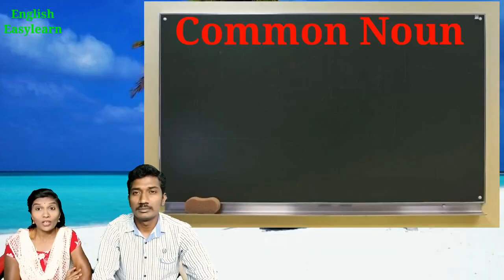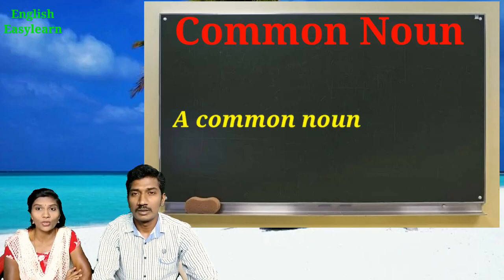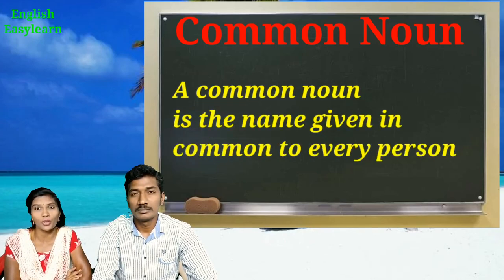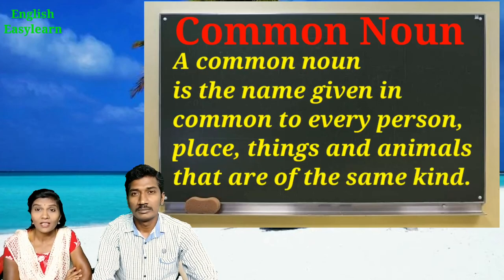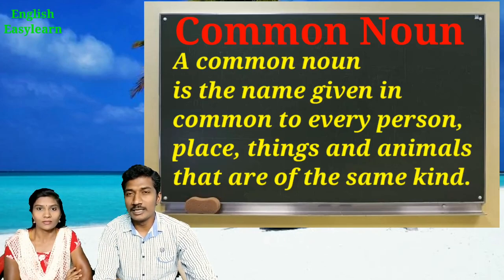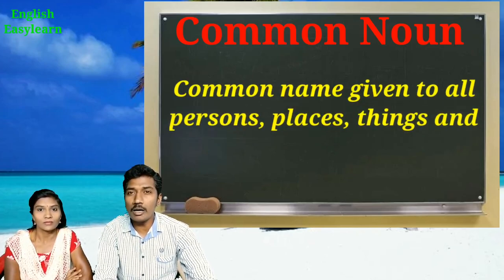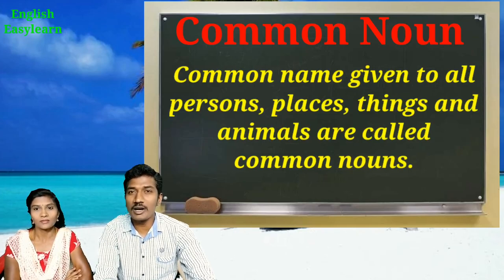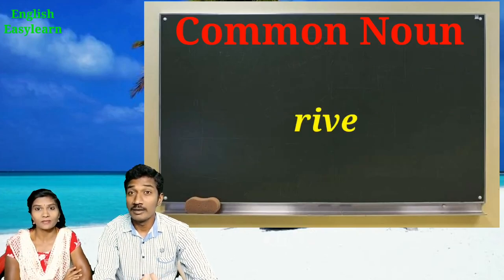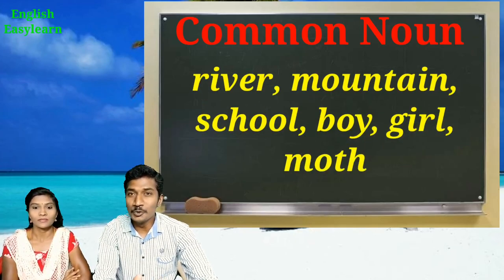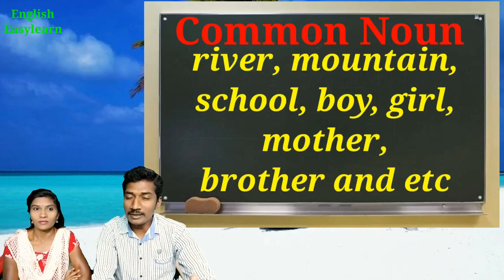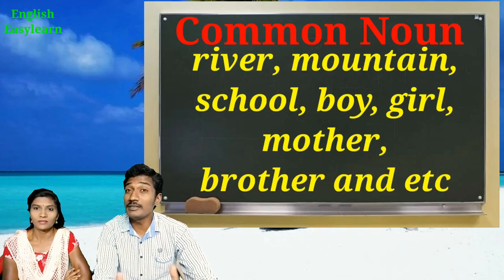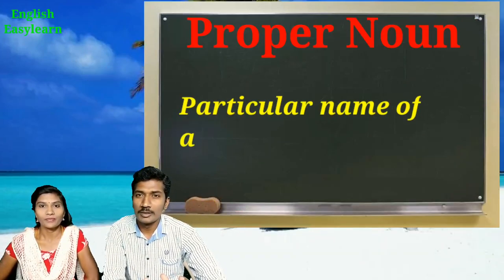What is a common noun? A common noun is a name given in common to every person, place, thing, or animal of the same kind. Simply saying, a common name given to all persons, things, and animals is called a common noun. Examples: river, mountain, school, boy, girl, mother, brother, and so on.